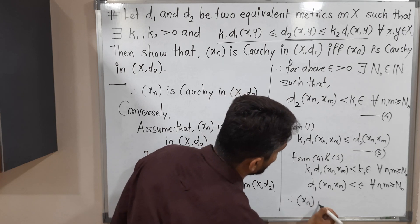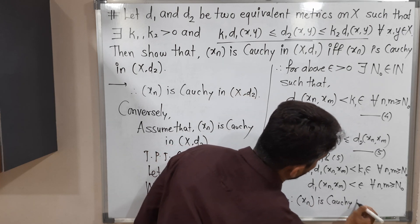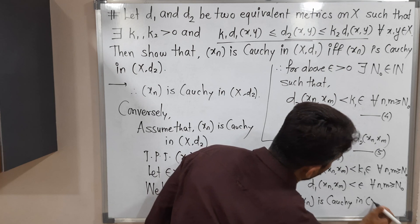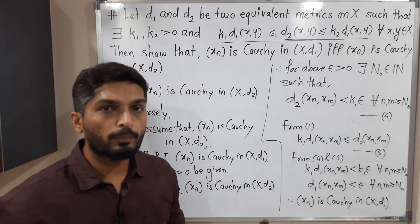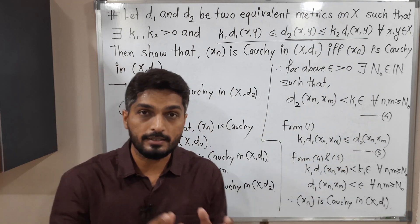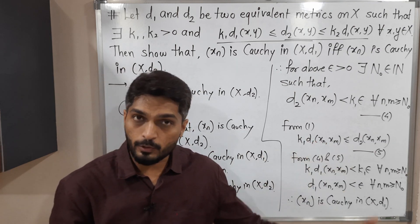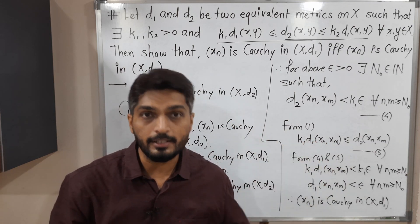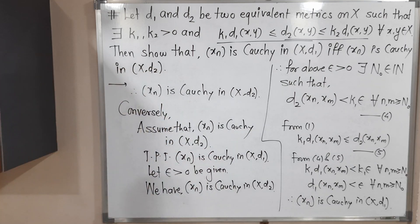Therefore xn is Cauchy in (X,d1). In this way we proved both directions: if xn is Cauchy in (X,d1) then it is Cauchy in (X,d2), and if it is Cauchy in (X,d2) then it is Cauchy in (X,d1). Both parts are proved.